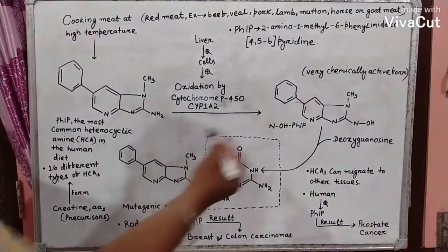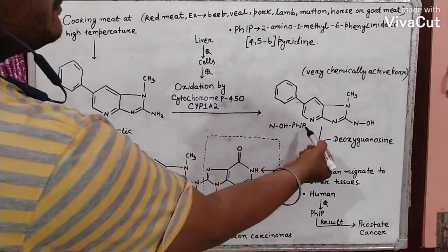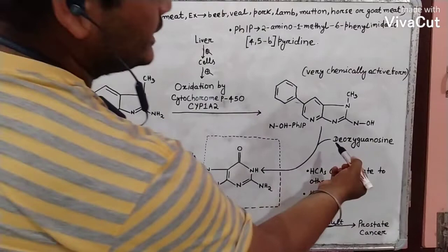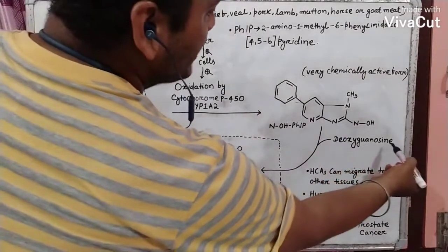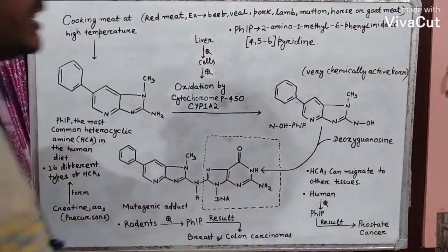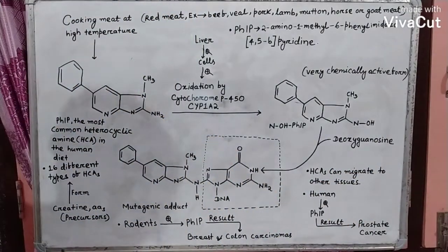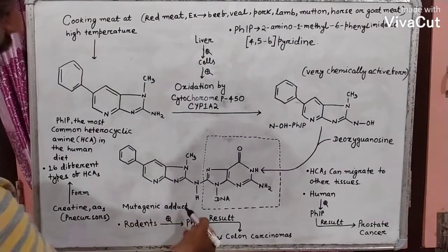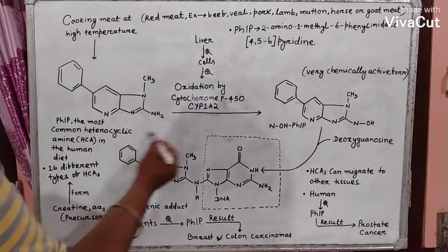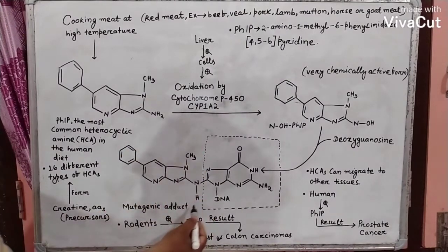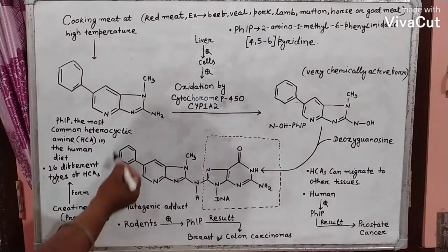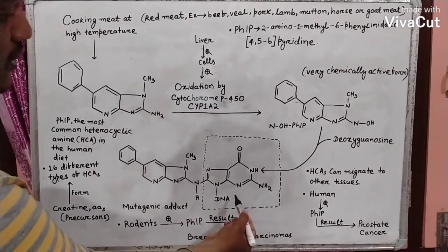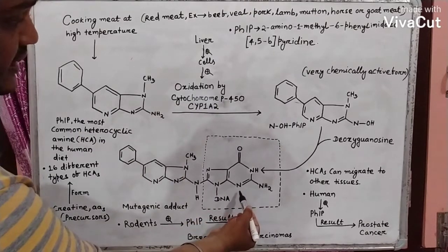This NOHPHIP then reacts with deoxyguanosine in the DNA to form a mutagenic adduct. This is the structure of the mutagenic adduct, and this is the guanosine.